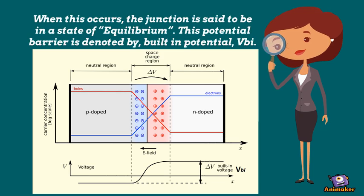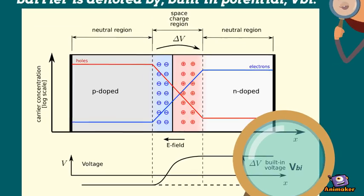When this occurs, the junction is said to be in a state of equilibrium. This potential barrier is denoted by built-in potential, V_BI.